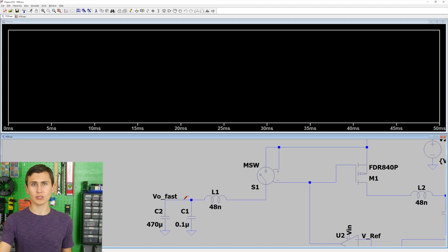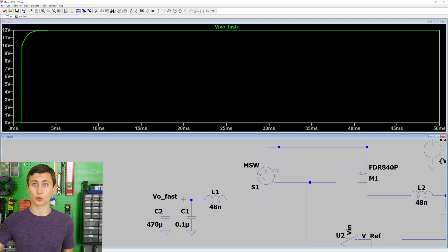The output voltage rises to 10 volts almost instantly and settles to 12 after less than 5 milliseconds. How does this compare to the slow output?